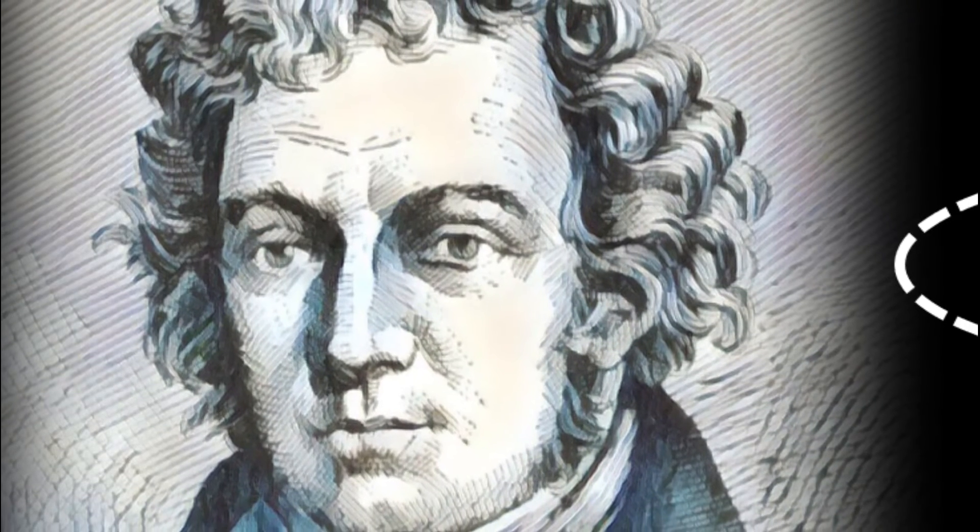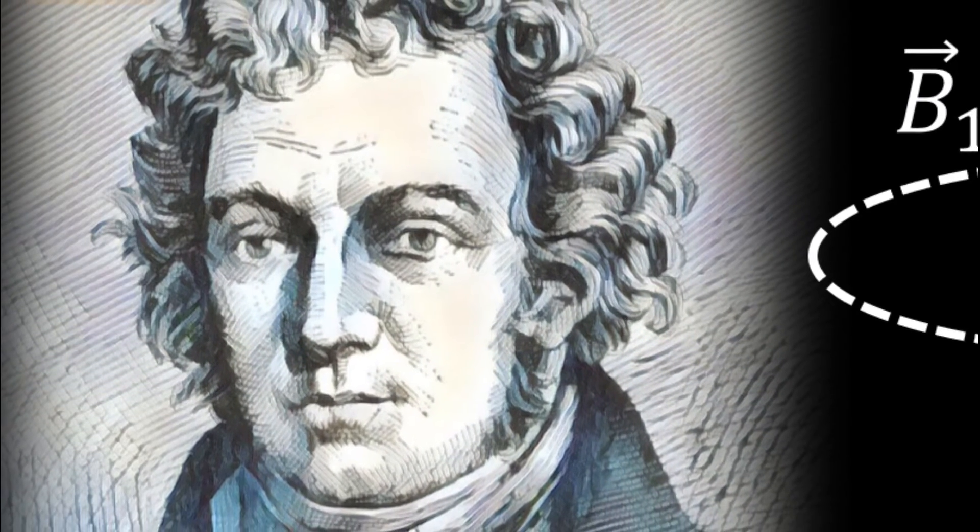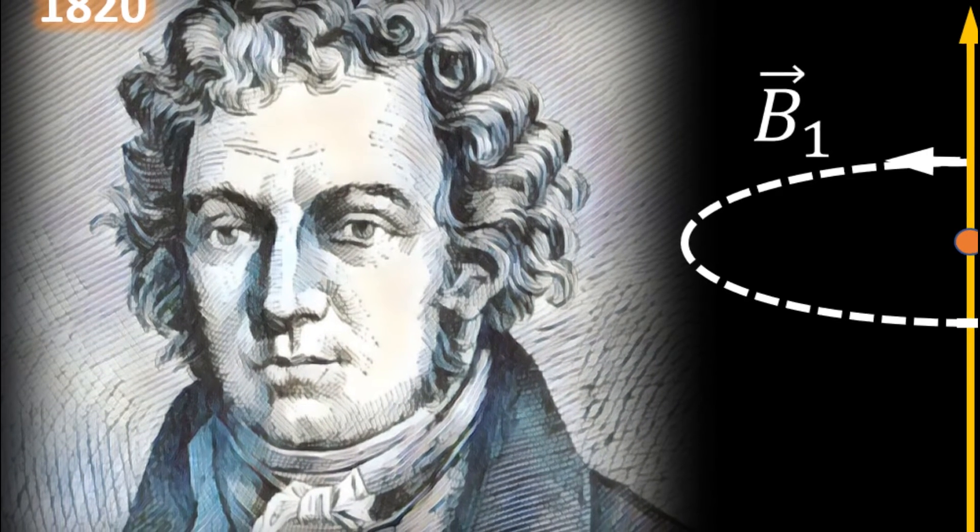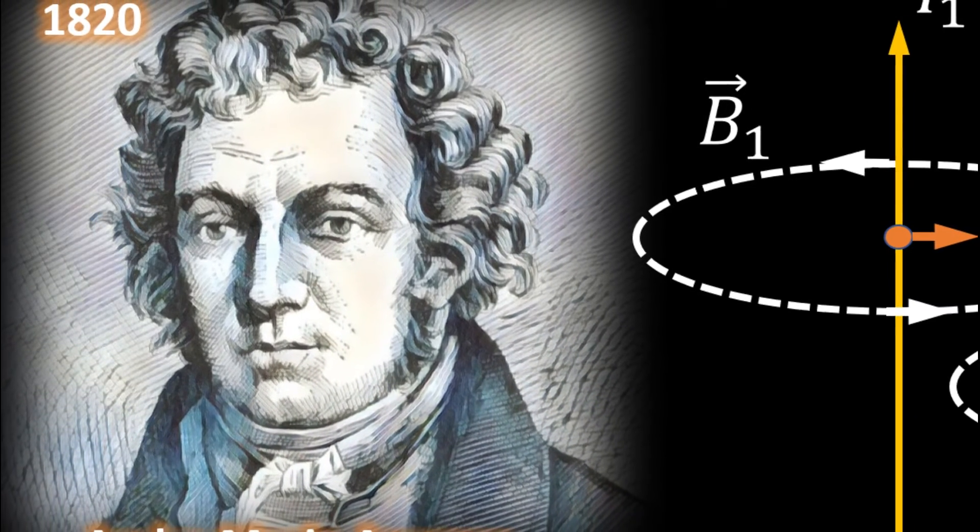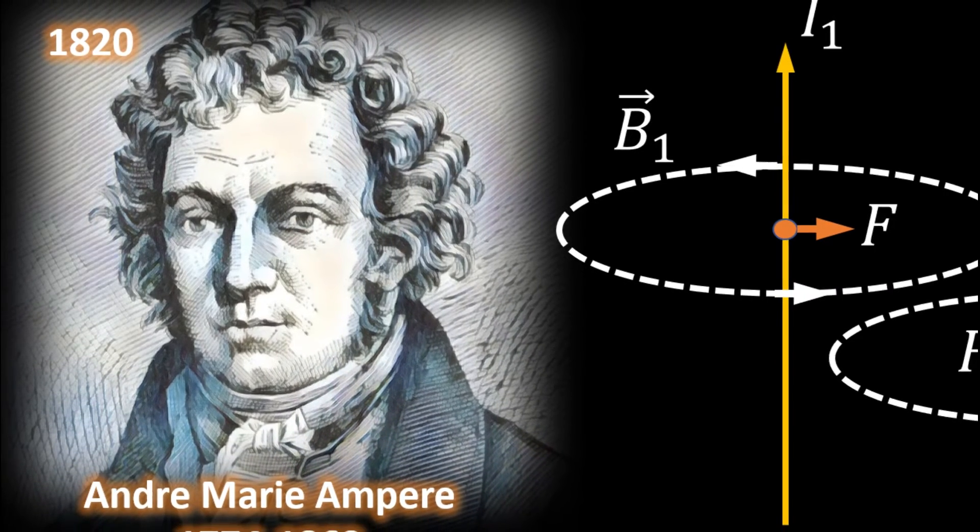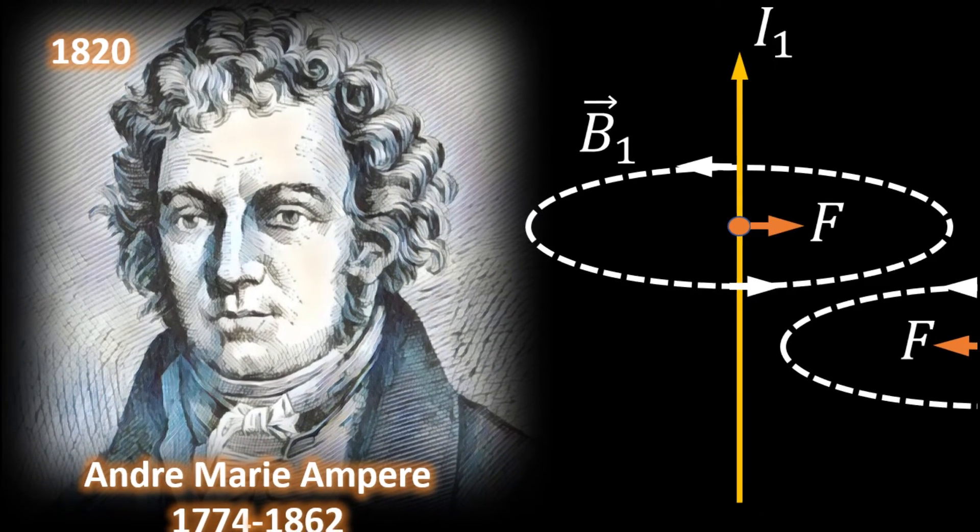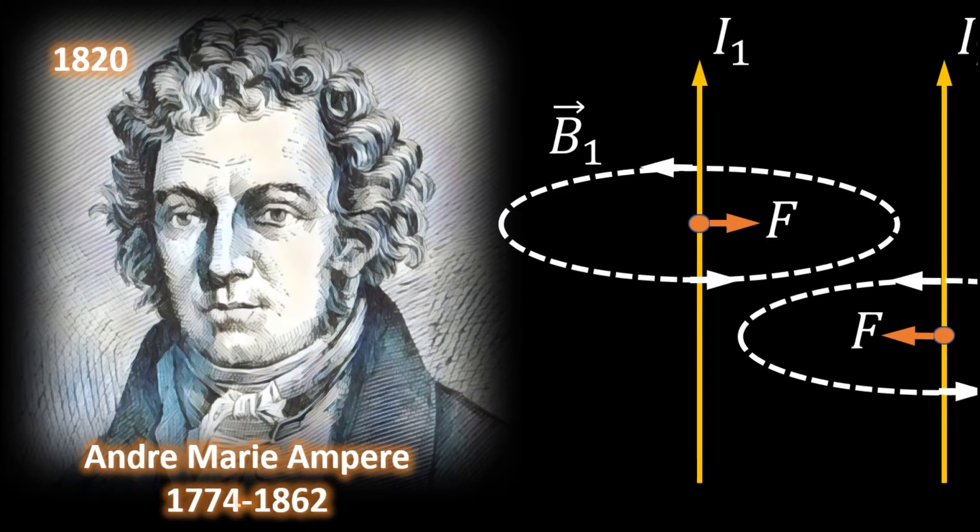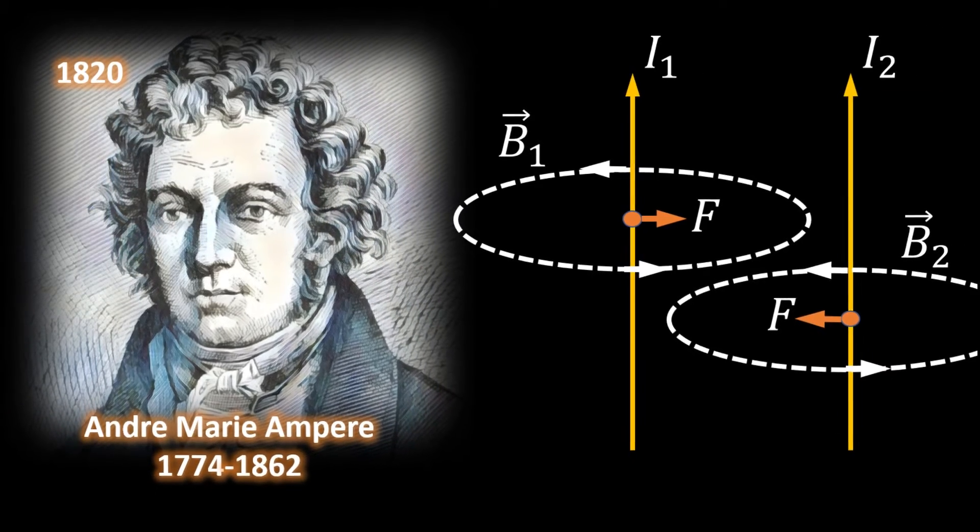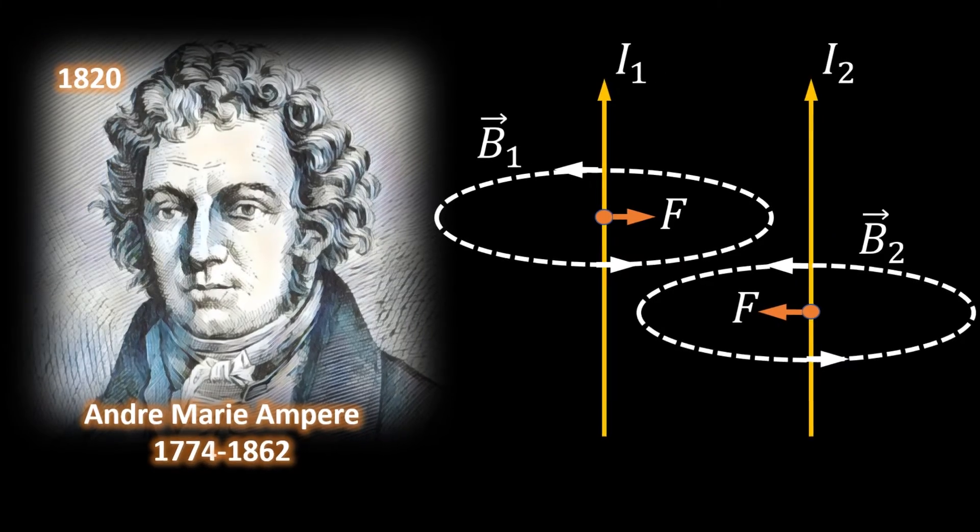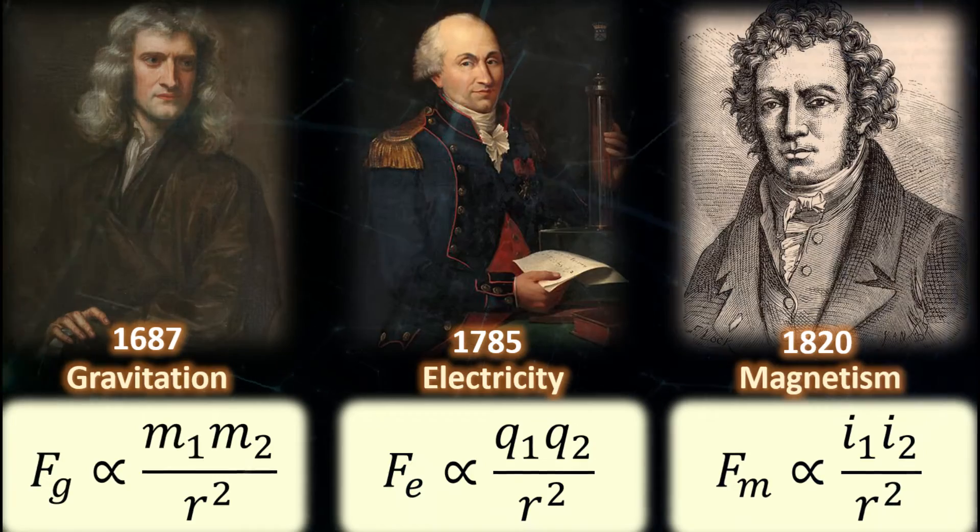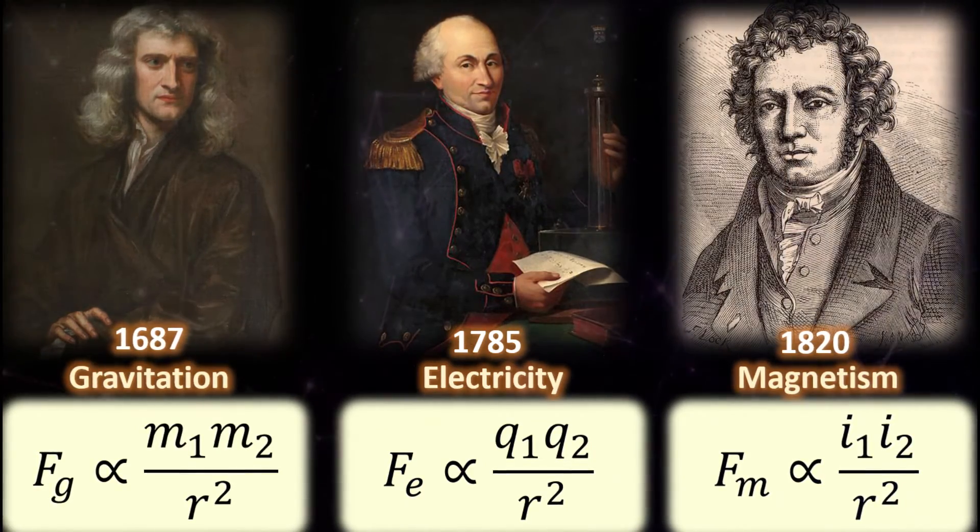Then entered Andre Marie Ampere in 1820, a French physicist and mathematician and a well-established member of the French Newtonian school of mathematical physicists. His first inclination was to investigate if two current carrying wires exert a force on each other. To his delight the wires indeed attract when current flows in the same direction and repel when they flow in the opposite direction.